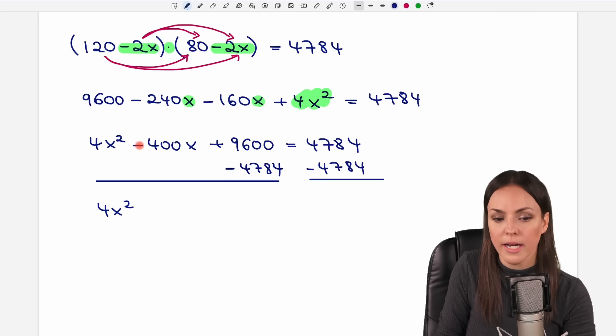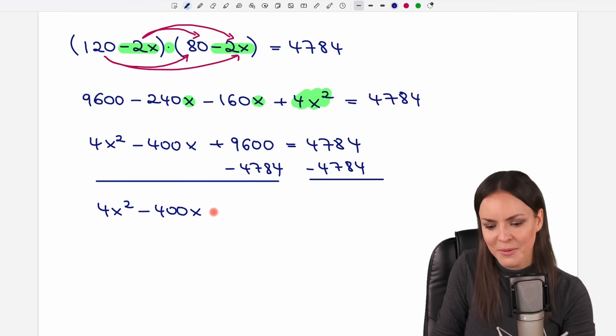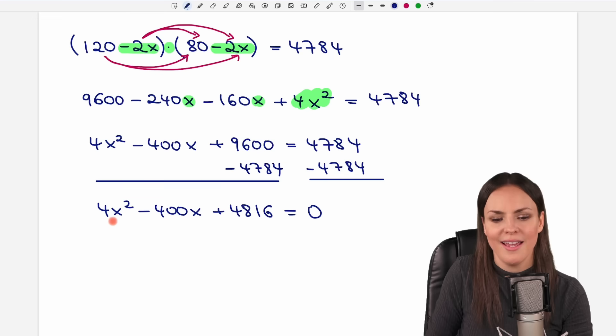4x squared minus the 400x. Then we calculate this here. Use a calculator. We get a result of 4816. And on the other side this cancels out and we get zero. Now this equation is perfectly prepared to be solved with a quadratic formula.